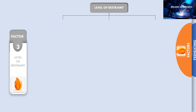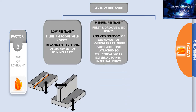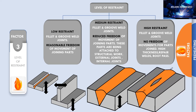Factor three is the level of restraint. This means the degree of freedom of the joining parts. There are three levels of restraint: low restraint, medium restraint, and high restraint. In low restraint joints, like fillet and butt welds, there is reasonable freedom of movement of the joining parts. In medium restraint there is reduced freedom of movement because the parts are being attached to structural works, for example external joints and internal joints. In high restraint there is no freedom of movement; high thickness welds, repair welds, and welds with a root pass which have higher stress concentration are examples of high restraint.